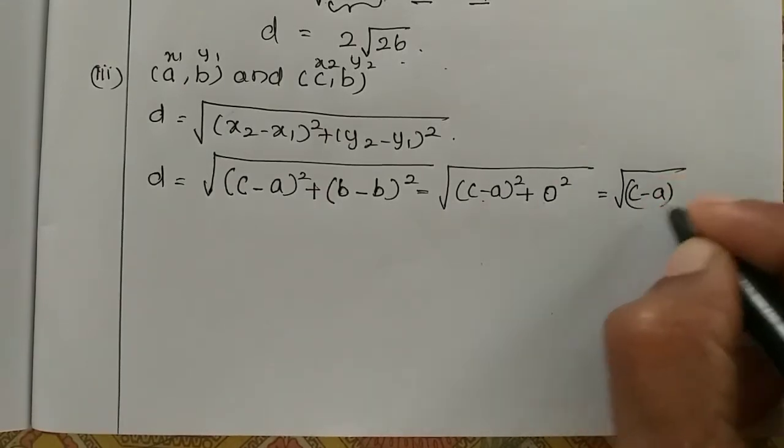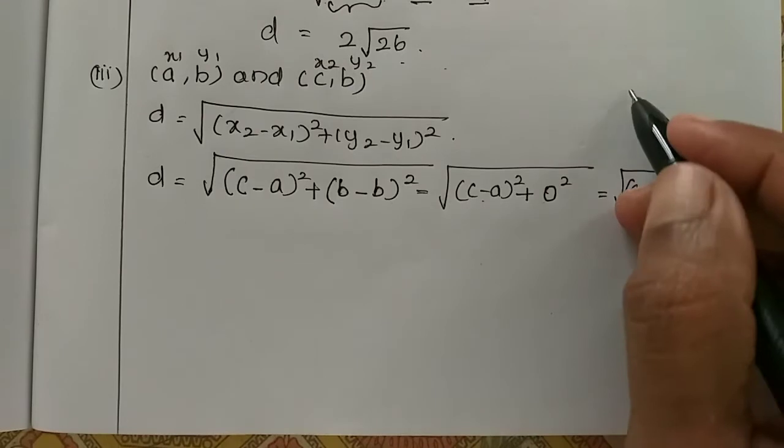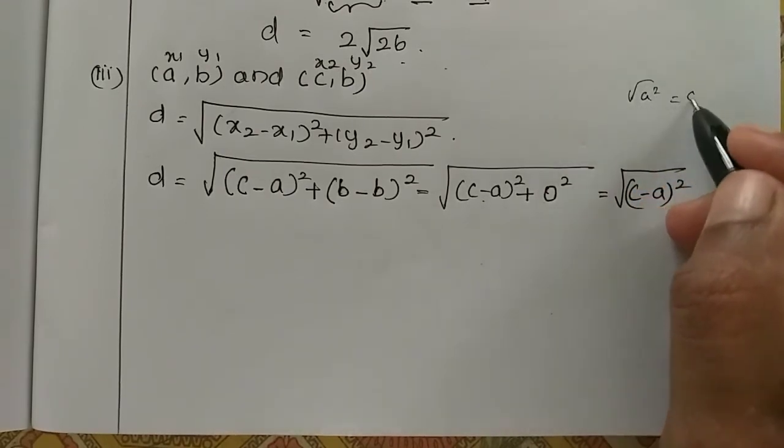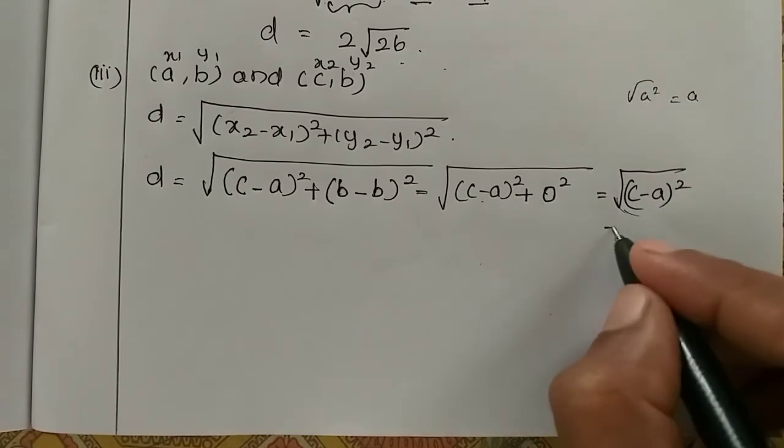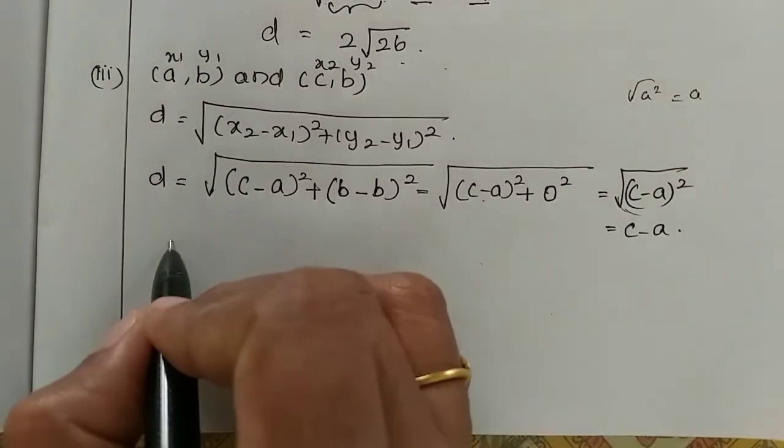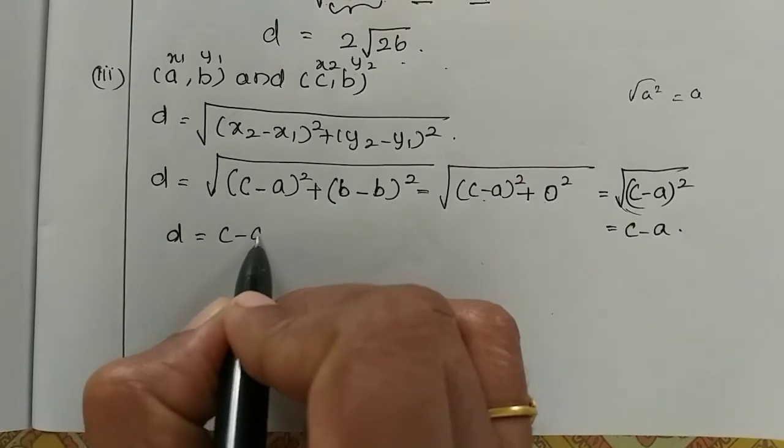So (c minus a) the whole square. So root of a square means a comes out because square root and square cancel each other. So we can take root out and the distance is equal to (c minus a).